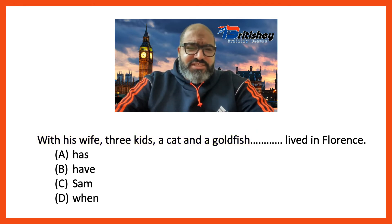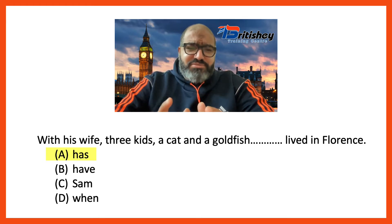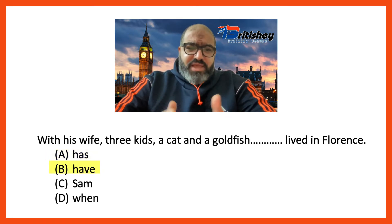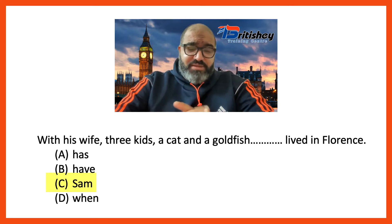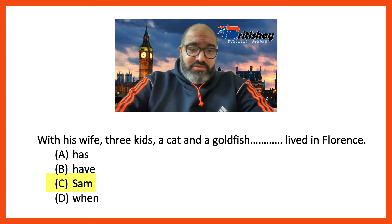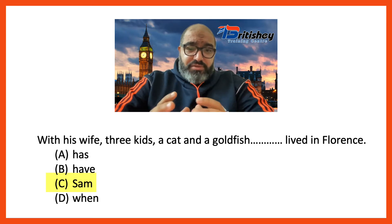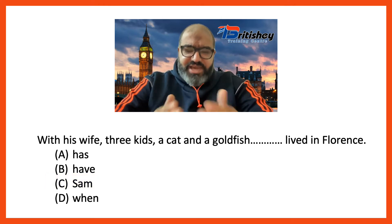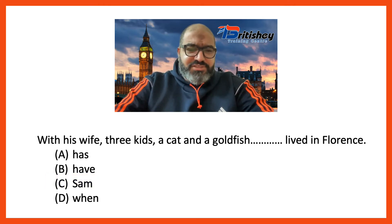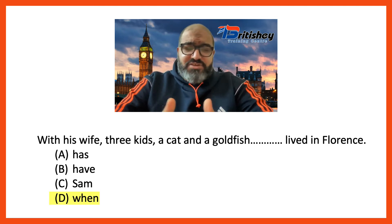So let's go and choose the answer. Is it 'has'? No, we don't need a verb — 'has' is a verb. Is it 'have'? Same idea — 'have' is a verb, and we don't need a verb, we need a subject. What about 'Sam'? Yes — Sam can be a subject because it's a name of a person. So we can say: 'With his wife, three kids, a cat and a goldfish, Sam lived in Florence.' That's a good answer. What about 'when'? No, because that's a connector, and we don't need a connector — we need a subject.